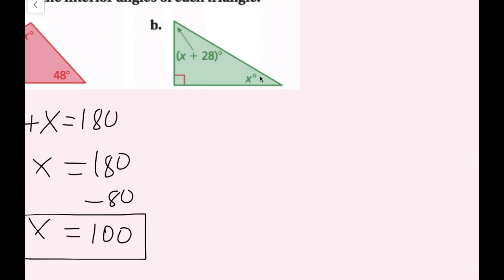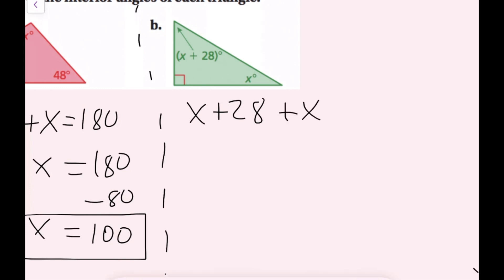For part b, I'm going to do the same thing. This angle is x plus 28 degrees, this one is x degrees, and we have a right angle of 90 degrees. So my equation is x plus 28 plus x plus 90 equals 180. The order of these terms does not matter. I didn't write parentheses around x plus 28 — they're just there to show that the whole expression is measured in degrees. Combining like terms: x plus x gives me 2x.